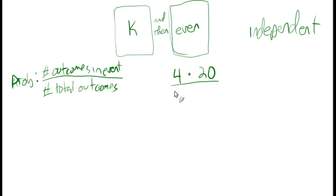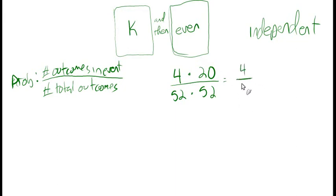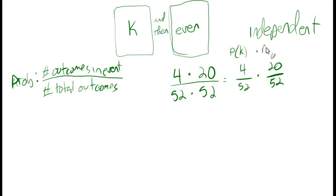How many ways can you pick two cards? The first card has 52 possibilities, and since we put the card back there are 52 possibilities for the second card. So we've counted all the ways the event can happen and all the ways two cards can be picked. That gives us 4 × 20 over 52 × 52, which is also the same as 4/52 times 20/52. Notice that 4/52 is the probability of getting a king, and 20/52 is the probability of getting an even. The probability of getting a king times the probability of getting an even equals the probability of getting a king then an even.